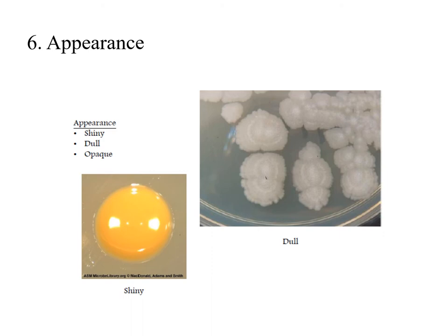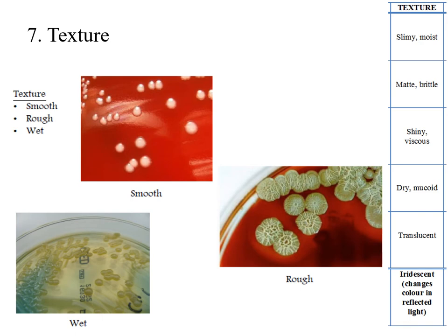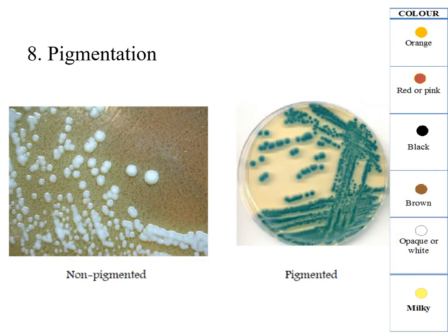The appearance of a bacterial colony can be shiny, dull, or opaque. As we can see here, this one is shiny and this one is dull. When we talk about examples of bacterial colonies, we'll show many that are opaque in appearance. For texture, we have smooth, rough, and wet textures. We also have shiny viscous, dry mucoid, and translucent textures, and we'll show different types when we discuss examples.